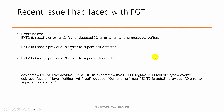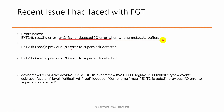Recently I was working on one of the FortiGates where in the error logs I observed this error. It was showing either 'extension fsync detected IO error when writing metadata buffers,' or it could also show as 'previous IO error to superblock detected.' In the event logs you can see something like this. These are different examples of how you can see this error.